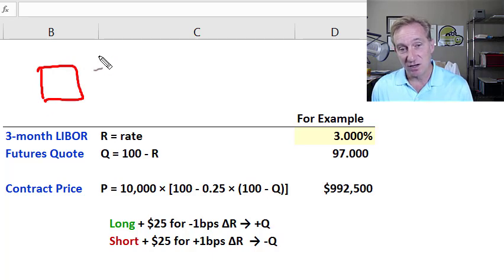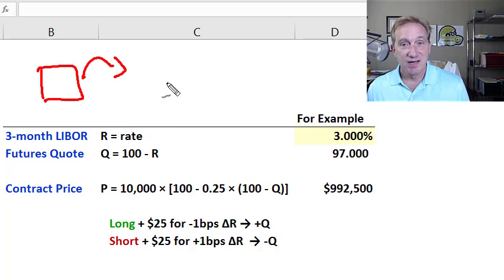The futures contract makes reference to an underlying commodity. In the case of consumption commodities, that underlying might be corn or copper. Here, the underlying is an investment commodity—an interest rate.